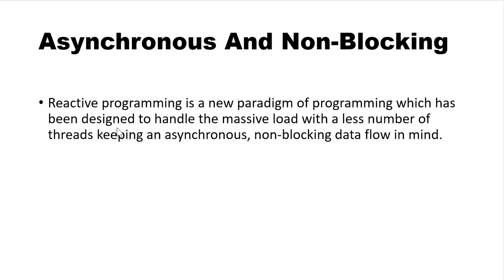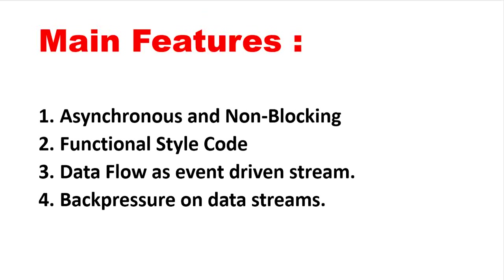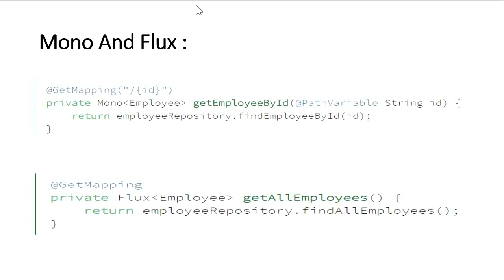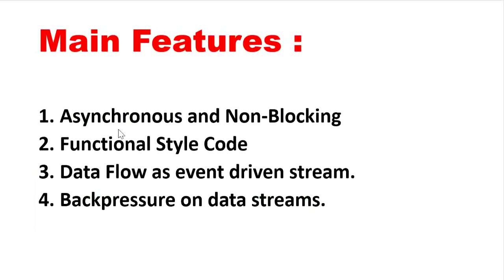Reactive programming is a new paradigm designed to handle massive load with fewer threads, keeping an asynchronous non-blocking data flow in mind. Another feature is functional style code, which is similar to the Java 8 Stream API and easy to work with using lambdas. Mono and Flux are the return types for reactive programming: Mono is used when getting a single record or no record from the database, while Flux is used when getting multiple records and handles 0 to N records.